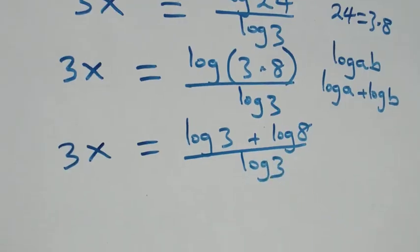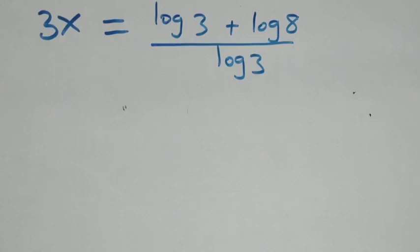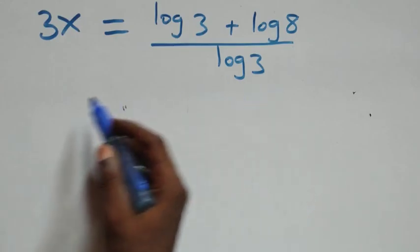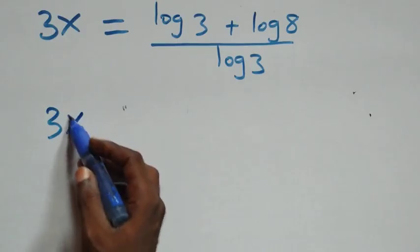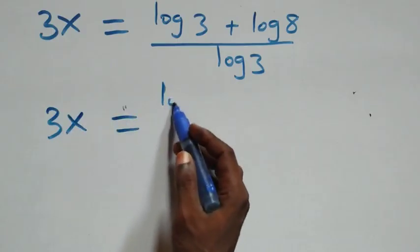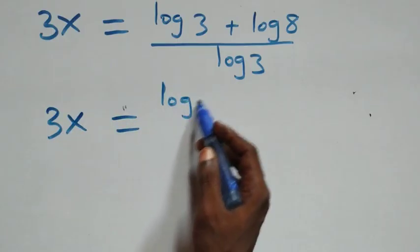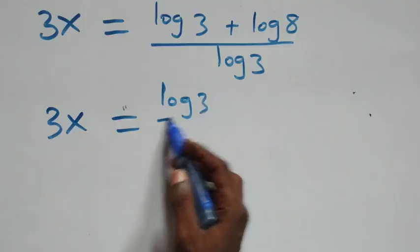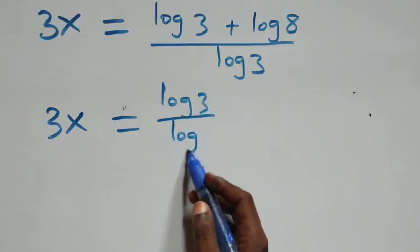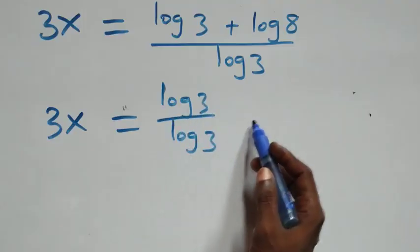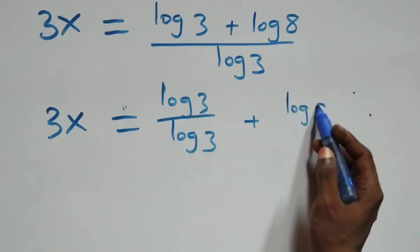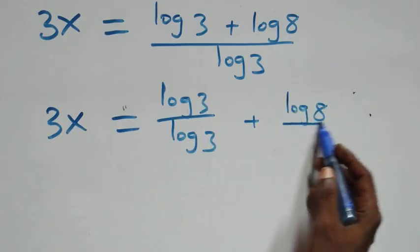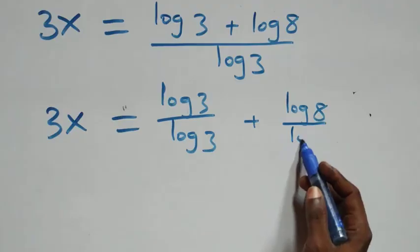Here log 3 cancels with log 3, leaving 1. We separate these into two fractions, and all we have becomes 3x equals to log 3 over log 3, plus log 8 over log 3.